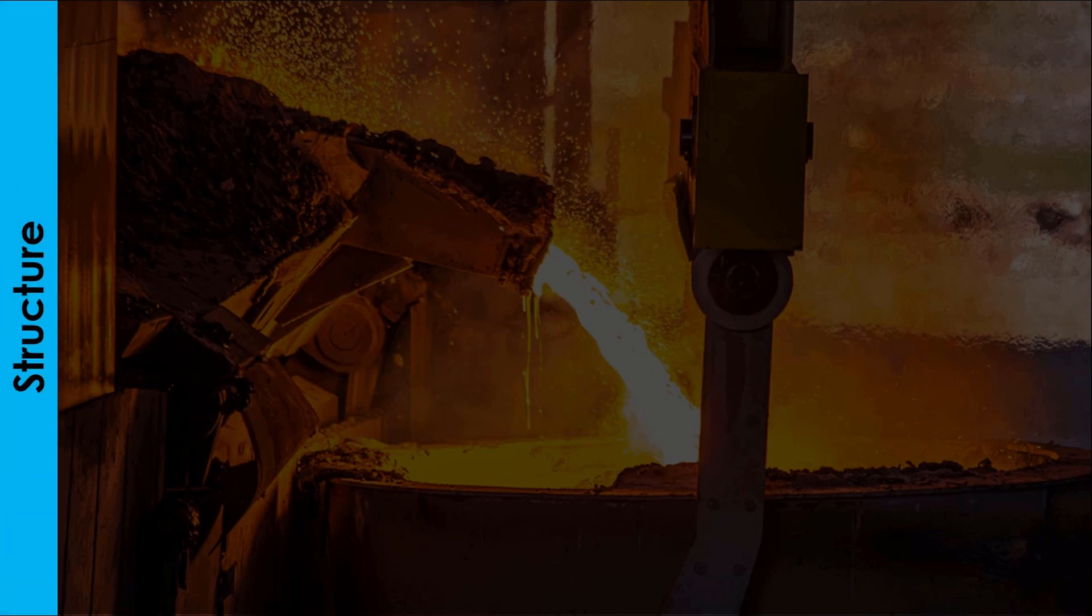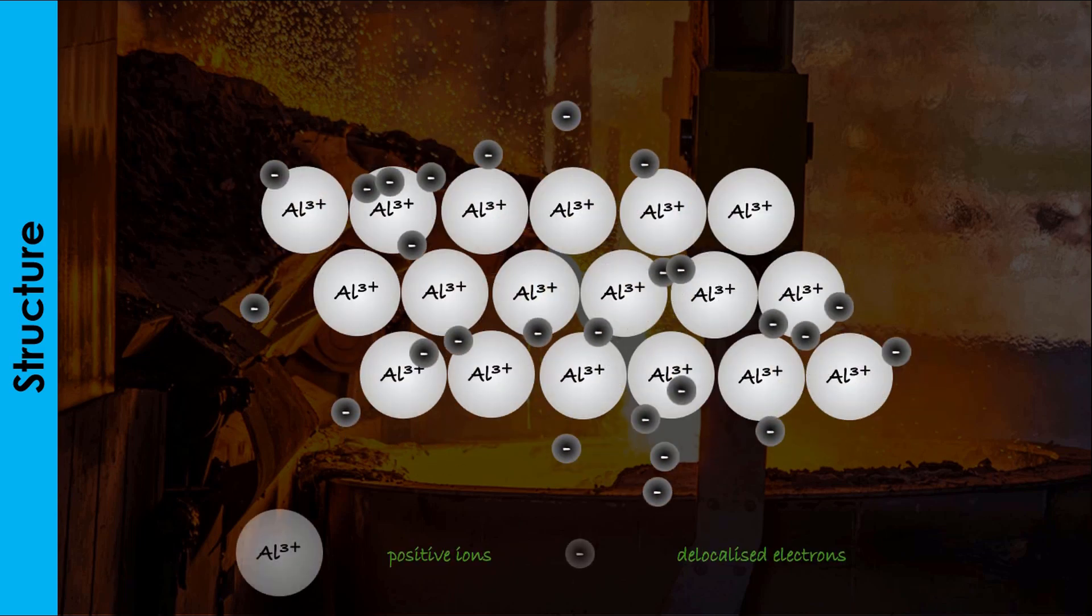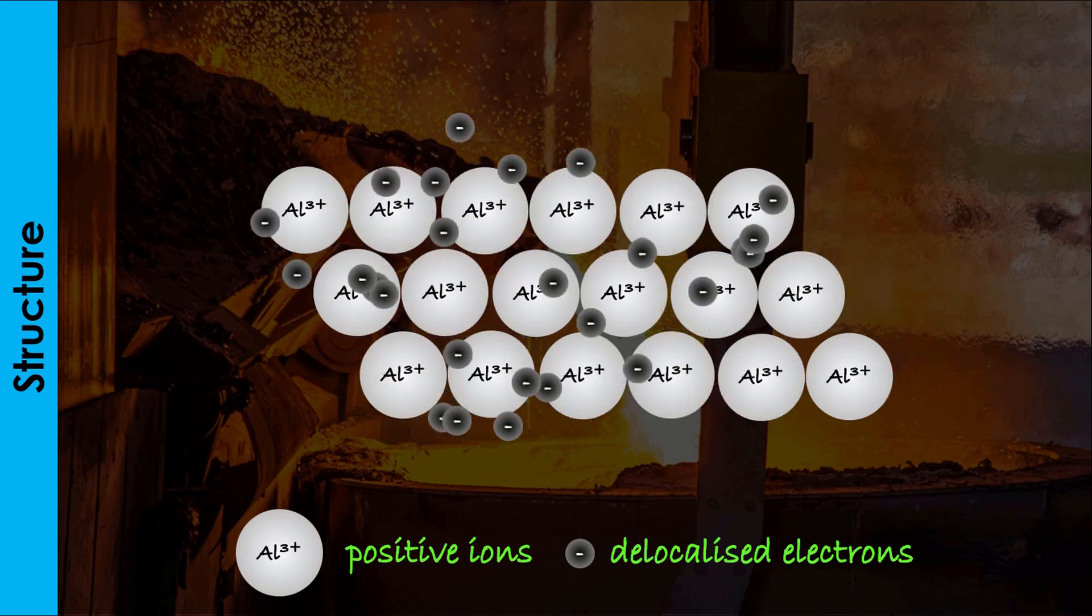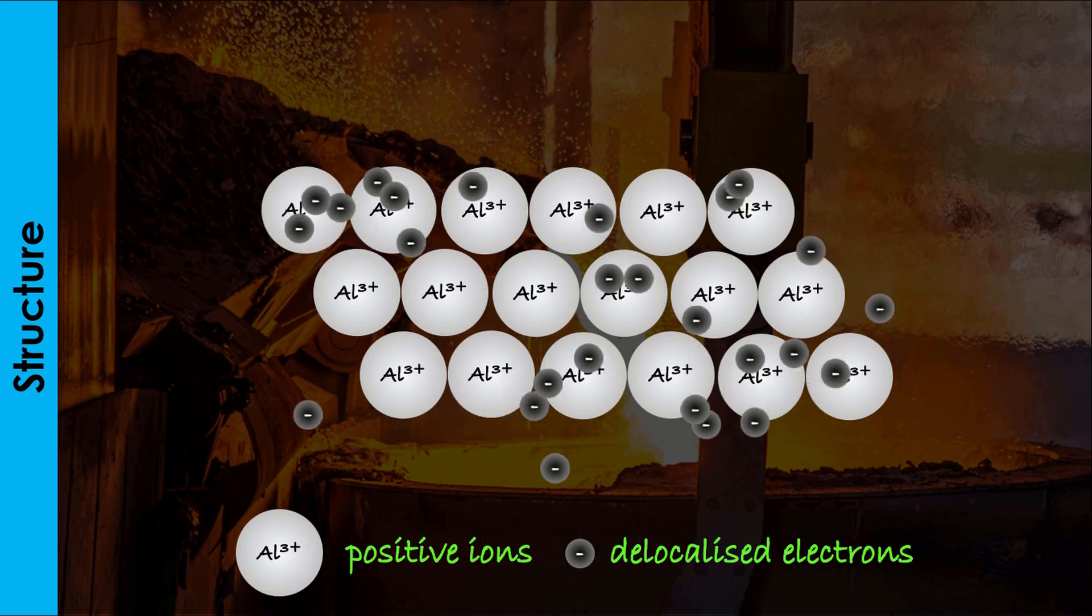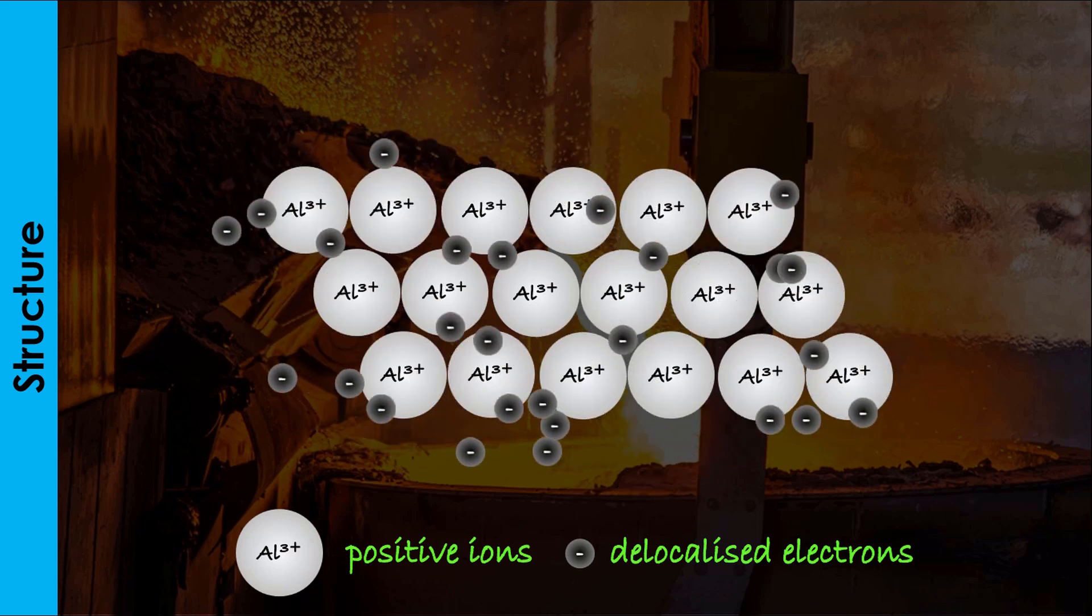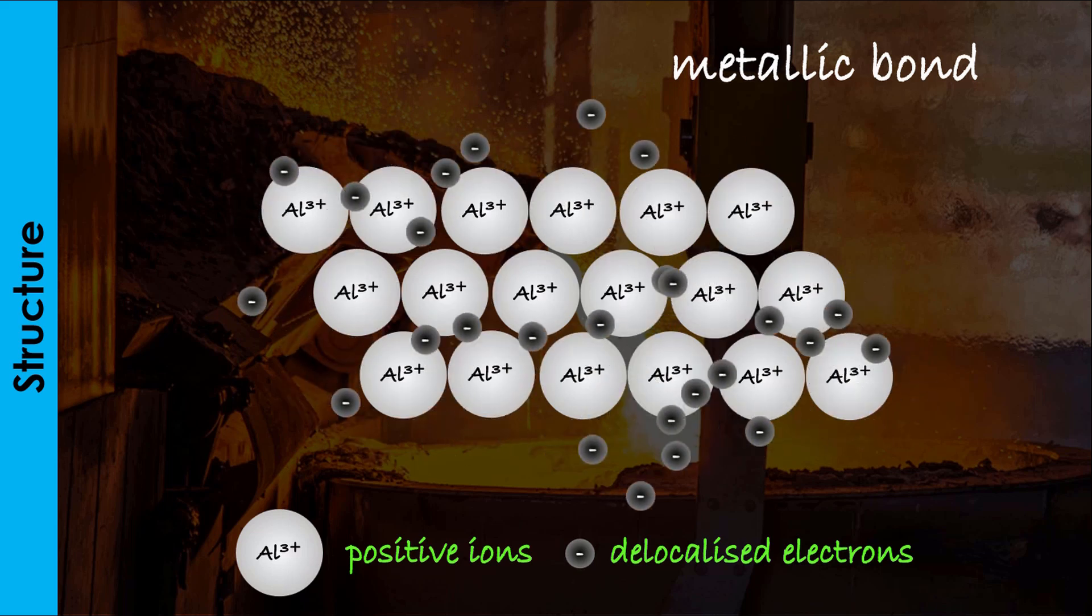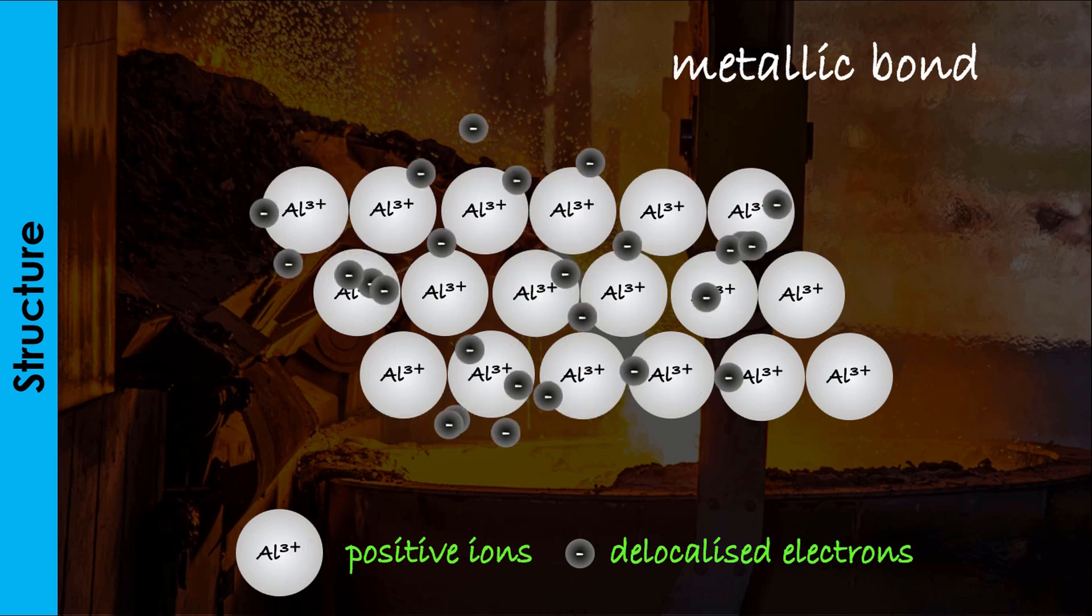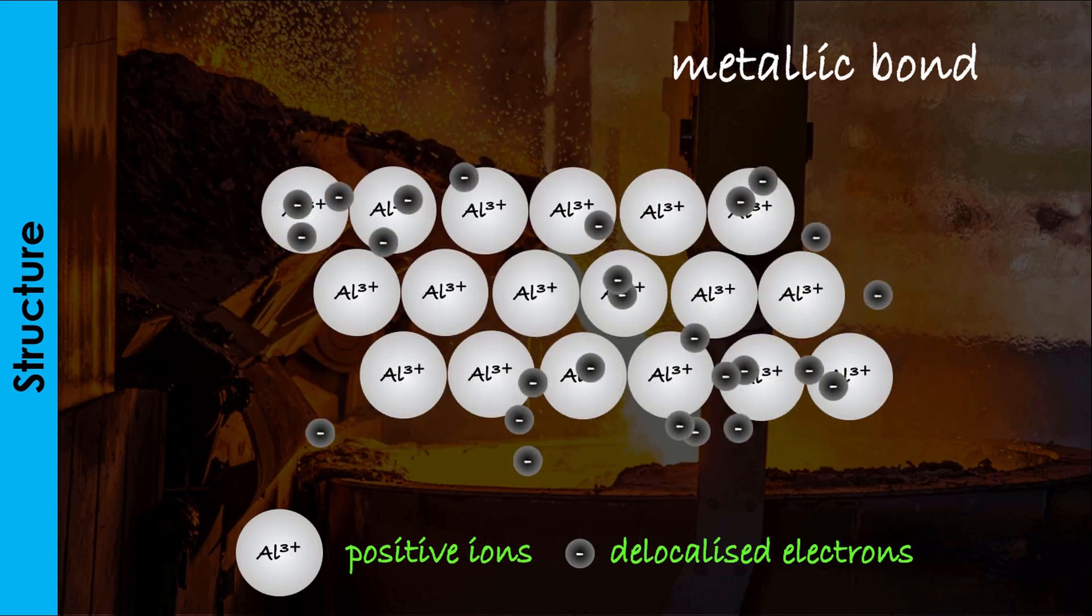The structure of aluminum is a metallic lattice made up of positive aluminum ions in a sea of delocalized or mobile electrons. These positive ions are attracted to the sea of electrons by strong electrostatic force of attraction called the metallic bond. This strong metallic bond accounts for the relatively high melting and boiling points of aluminum, its physical state as a solid, and moderate tensile strength.